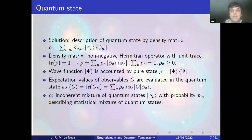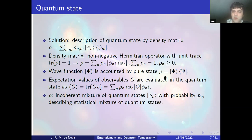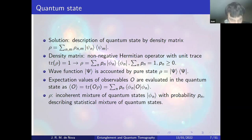These problems are avoided by describing the quantum state in terms of a density matrix. This density matrix is a non-negative Hermitian operator with unit trace in a certain Hilbert space. For a pure wave function state, the density matrix takes the form |ψ⟩⟨ψ|, and expectation values of observables are evaluated as the trace Tr(ρO). In general, the density matrix represents an incoherent mixture of quantum states |φₙ⟩ with some probabilities pₙ — an extra statistical mixture.